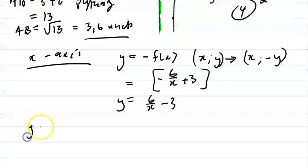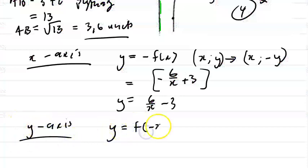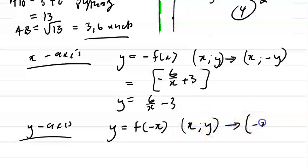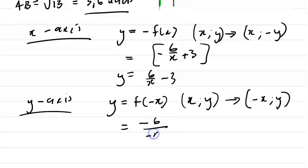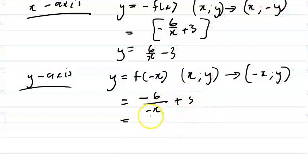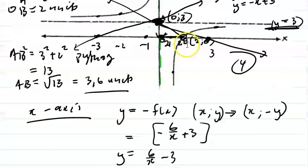For a y-axis reflection, the rule is y equals f(minus x), and the transformation rule is (x, y) becomes (minus x, y). So you substitute minus x into the function: you get minus 6 over minus x plus 3. Minus over minus is plus, so that gives you 6 over x plus 3. So y equals 6 over x plus 3. Just follow the rules, do your substitution, and it'll be straightforward.